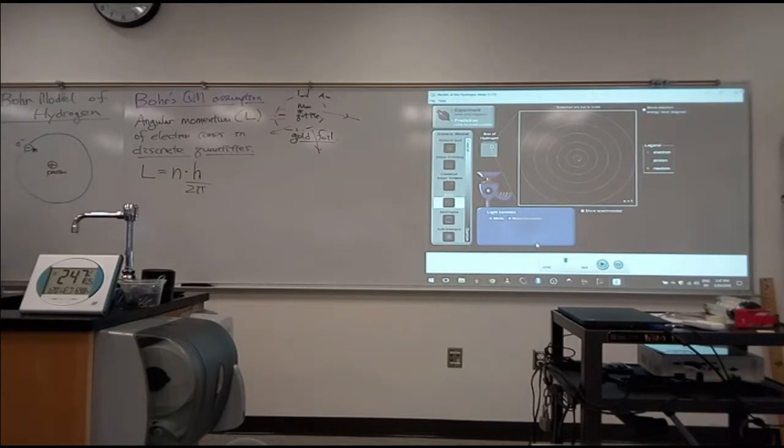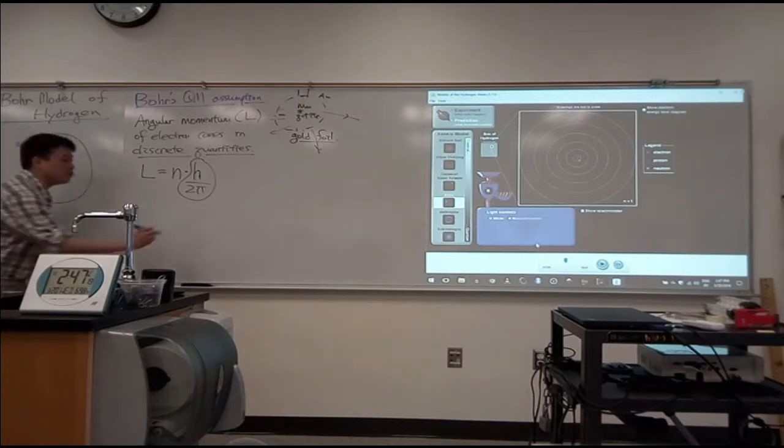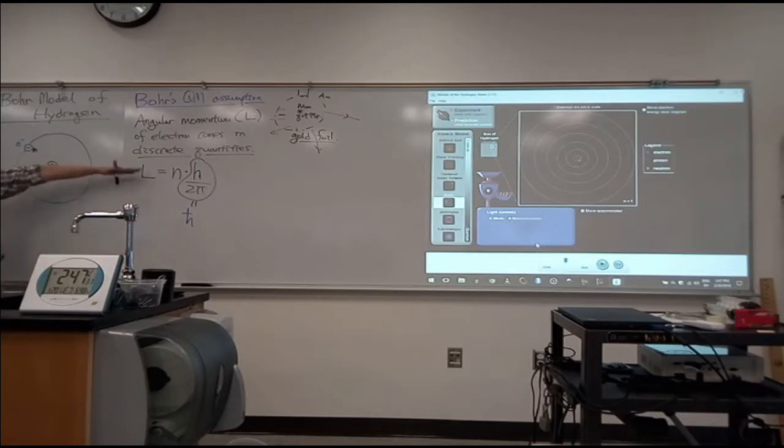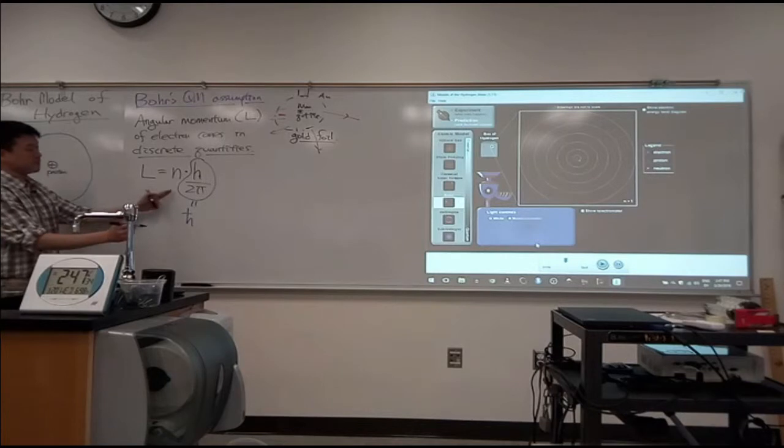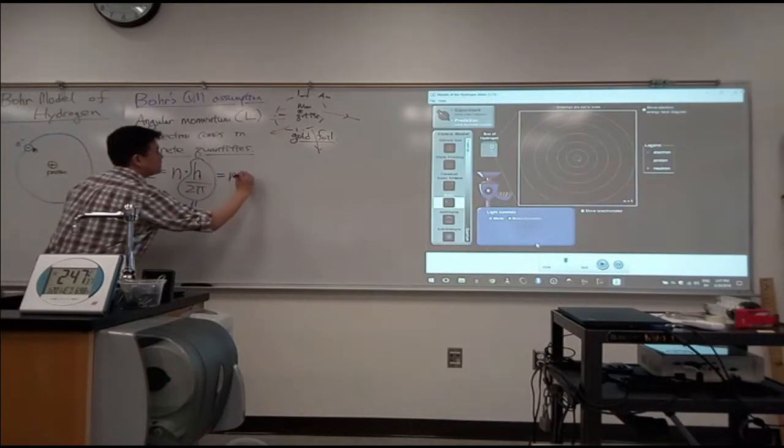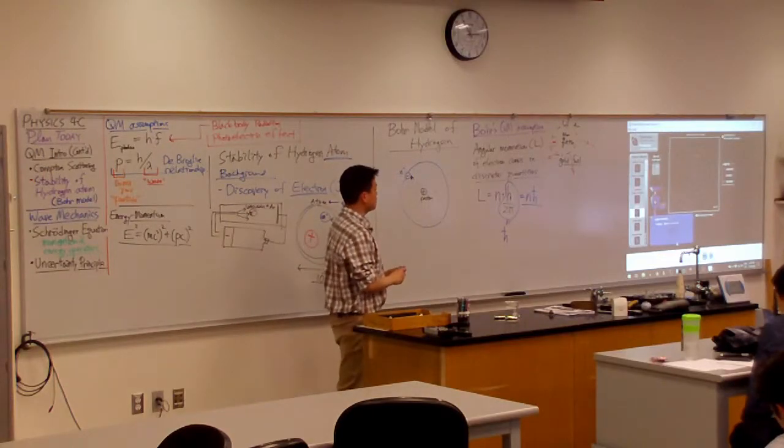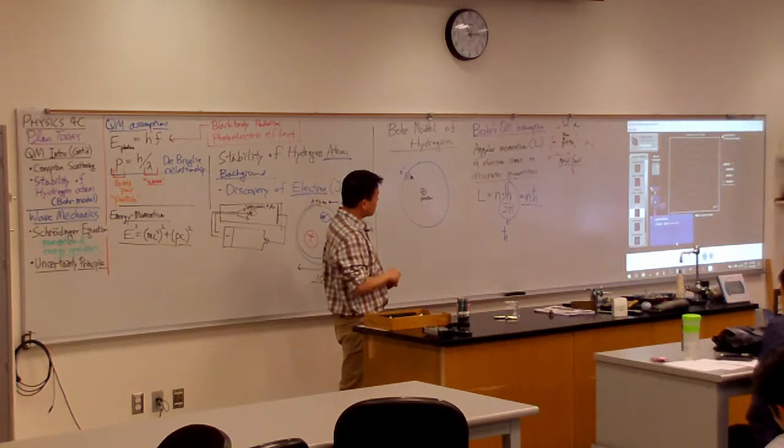So actually, this particular combination of constants happen a lot in quantum mechanics. So kind of like with the gamma in special relativity, we give this a special letter. It's called h bar. Or if you want to spell it out, Mathematica calls this reduced Planck constant. So in terms of this, this is what Bohr assumed. That angular momentum of this electron comes in these discrete quantities, n h bar.